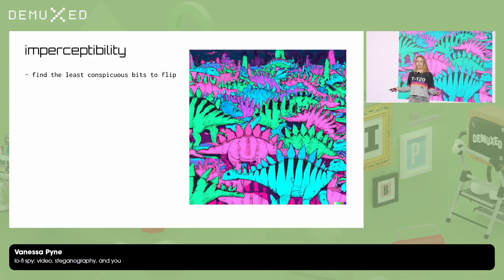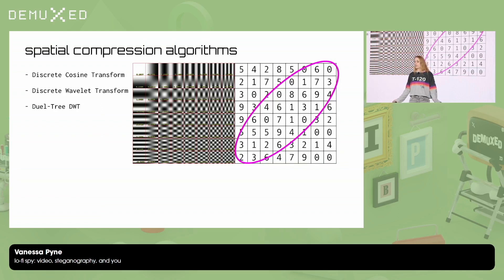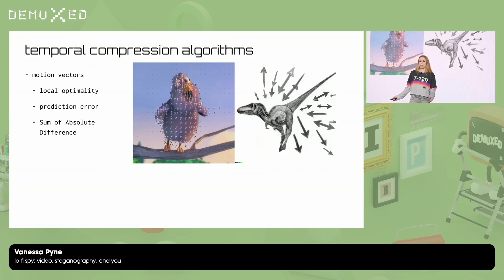Armed with this tool, we sneak into imperceptibility and find the least conspicuous bits to flip. Compression algorithms are good at identifying information we won't even miss, so they're ideal to exploit. In the spatial domain, we can mess with discrete cosine transform — instead of applying LSB to pixel values directly, we apply it to the DC coefficients when compressing the media, altering only the middle frequencies because they're safe to hide data yet avoid perceptible changes. Same goes for dual tree and vanilla discrete wavelet transform — the fancier the algorithm, the better for hiding secrets. In the temporal domain, we can mess with motion vectors. The math involves local optimality, prediction error, and sum of absolute difference fed into an AI model.